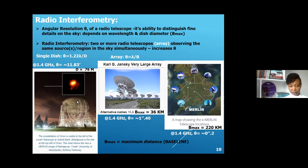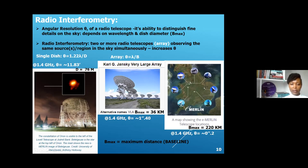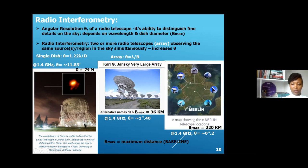I've shown a single dish here — this is the Lovell Telescope at the Jodrell Bank Observatory. And then we have examples of radio telescope arrays: the Karl Jansky Very Large Array in the US, composed of 28 dishes with a maximum baseline of 36 kilometers, and then we have the e-MERLIN, the Enhanced Multi-Element Radio Linked Interferometry Network in the UK, composed of seven telescopes distributed across the UK with a maximum baseline of 220 kilometers.